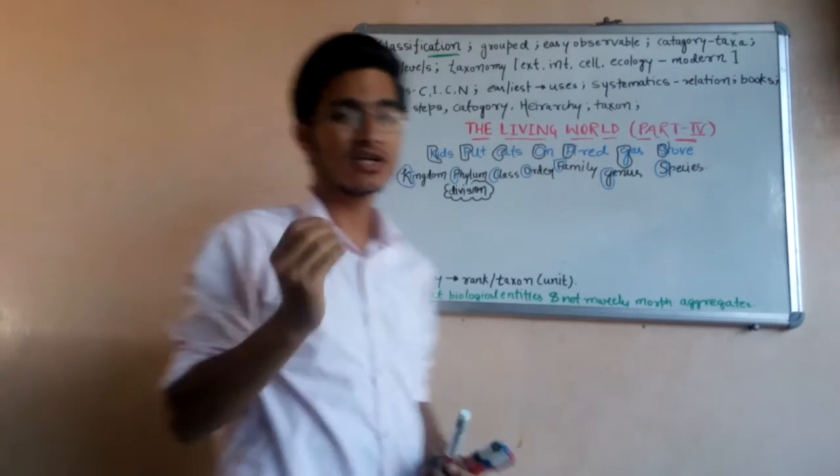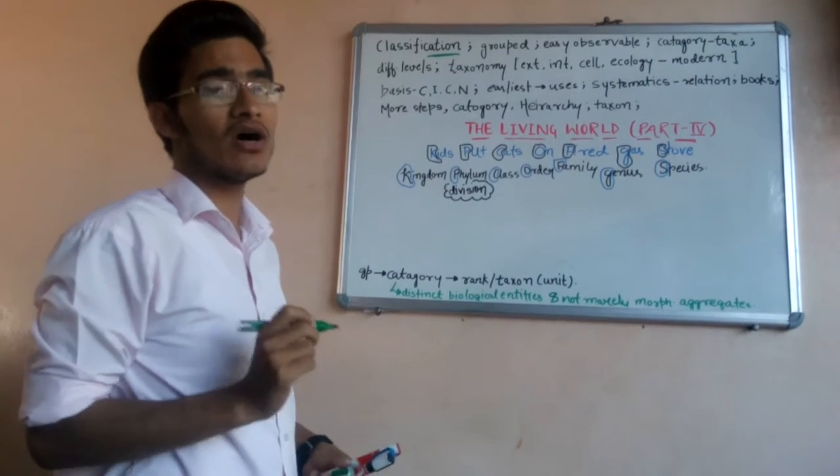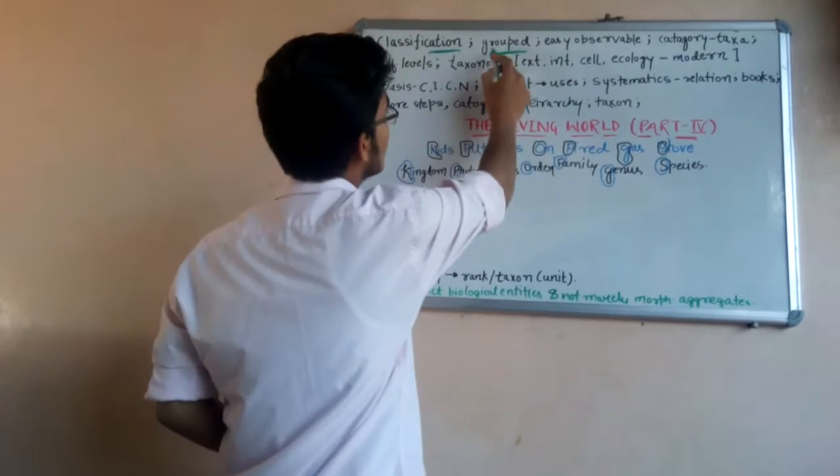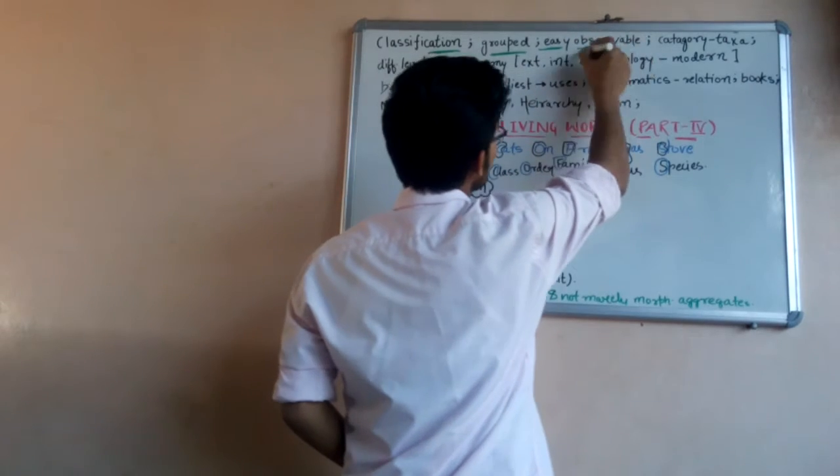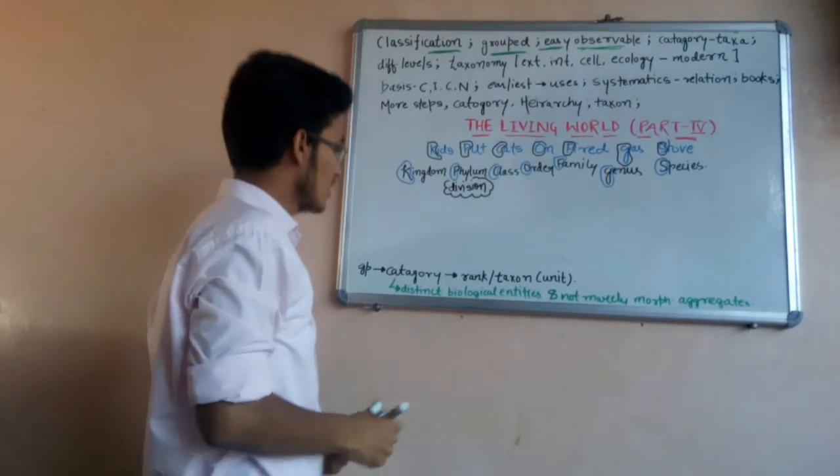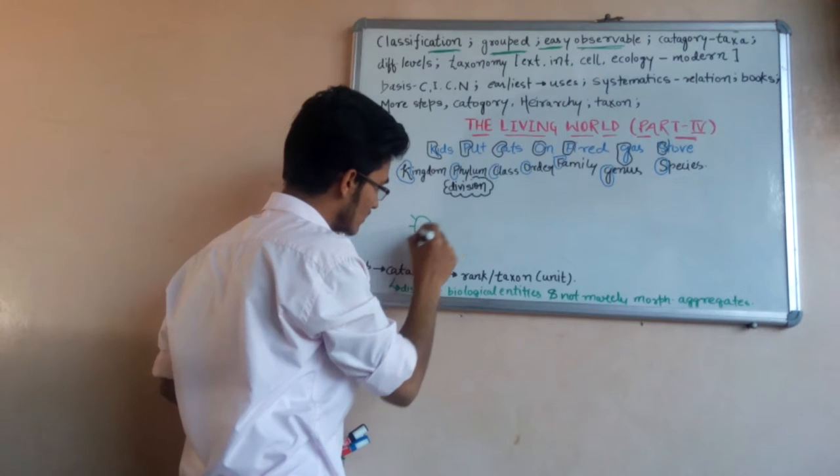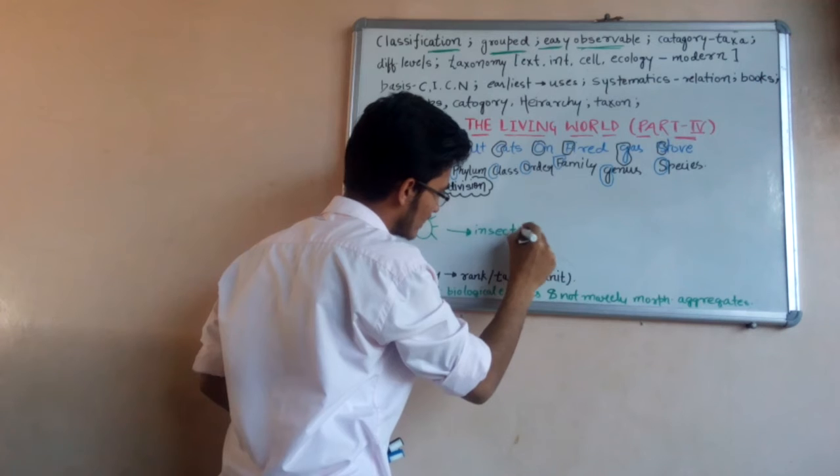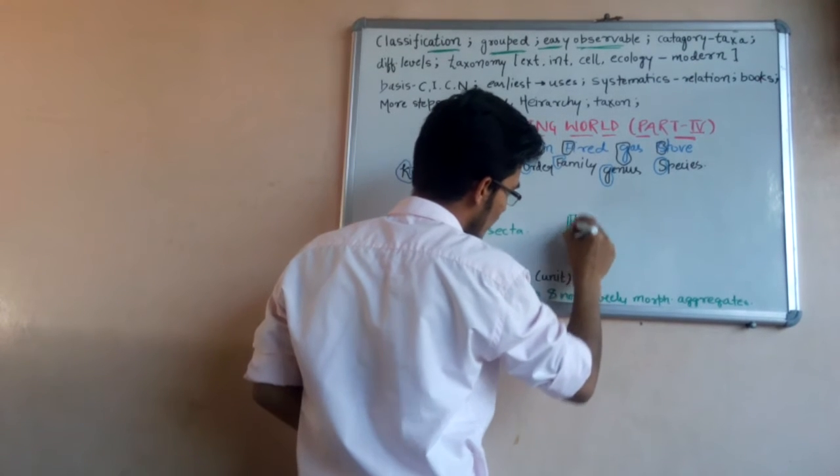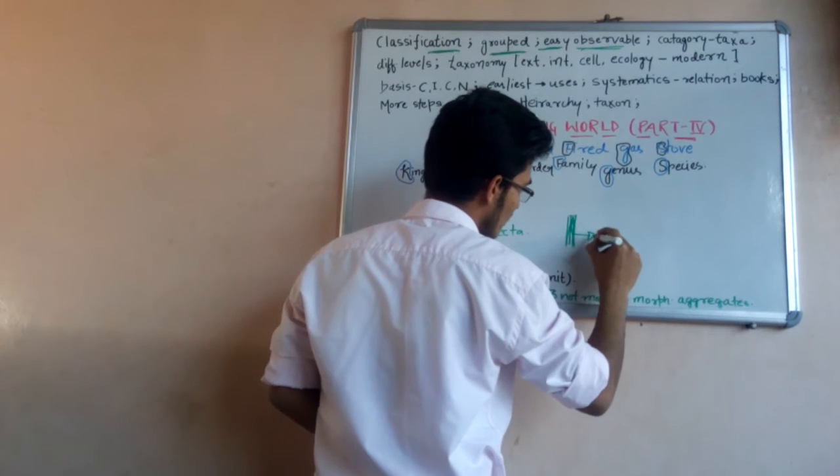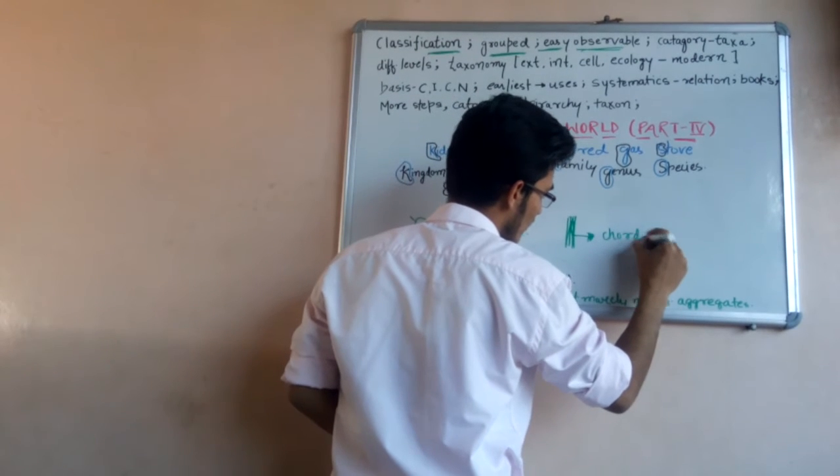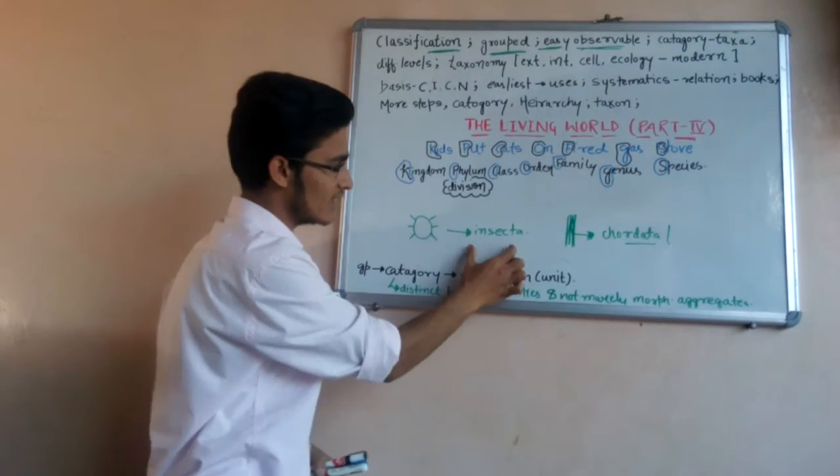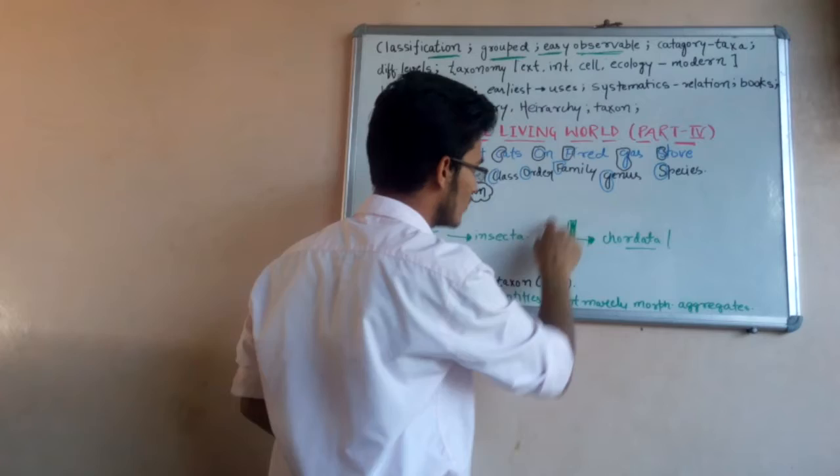What is classification? Classification is a process by which all the organisms present in the atmosphere or in the surrounding are grouped based on easily observable characters. Let us take an example: the organisms that have three pairs of appendages are placed in class Insecta, and the organisms that have a notochord are placed in phylum Chordata. We are classifying organisms based on easily observable characters.